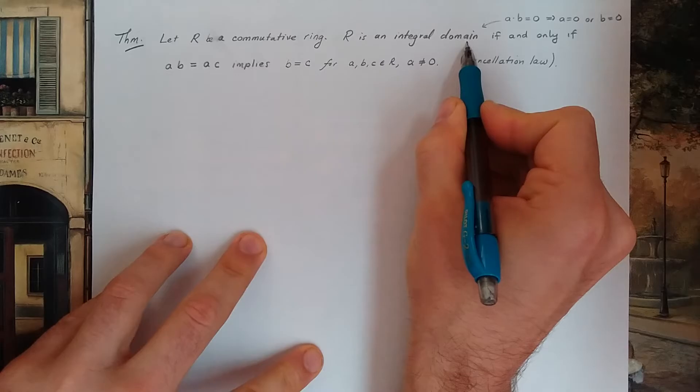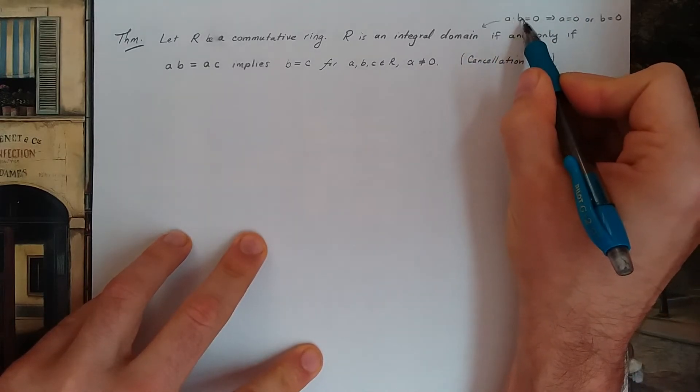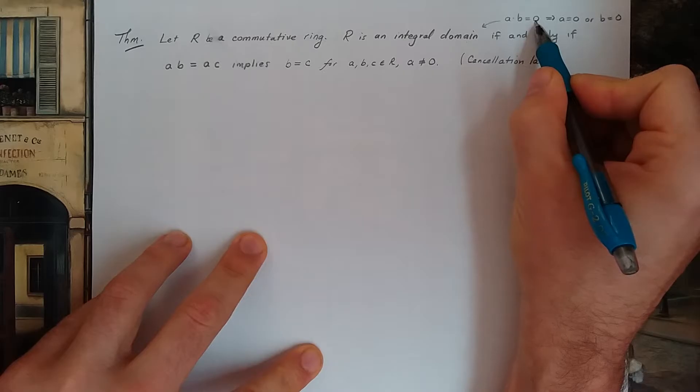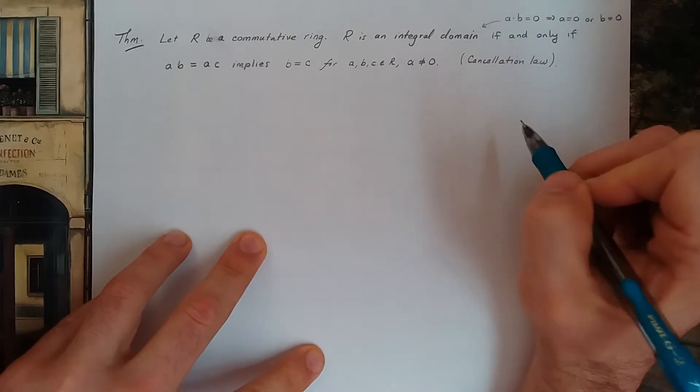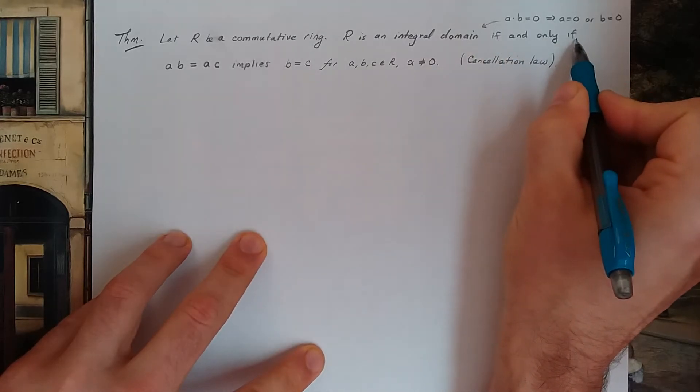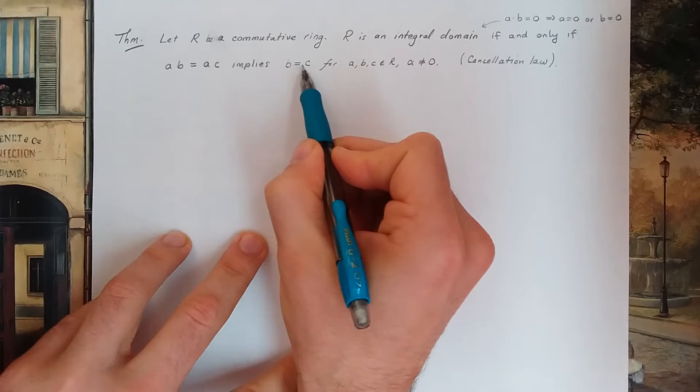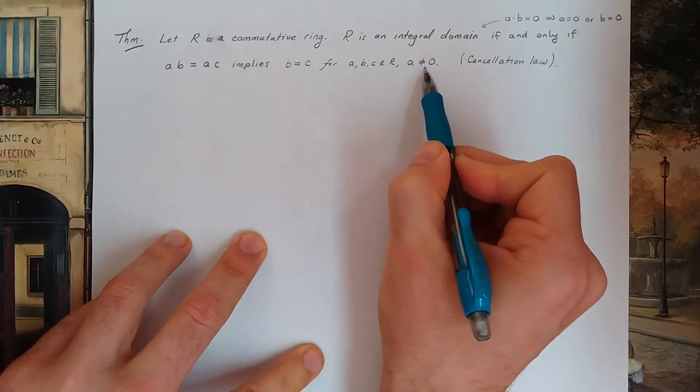Then R is an integral domain, and remember an integral domain means that if you ever have a times b equaling zero, then either a or b has to be zero. So we have an integral domain if and only if ab equals ac means b equals c if a is non-zero.